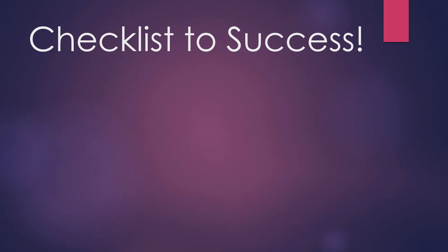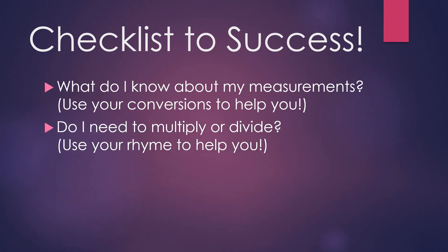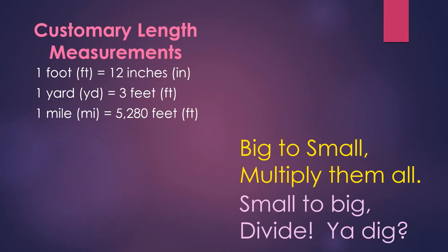When doing your conversions today, use this checklist for success. Step one: ask what do I know about my measurements — this is where your conversion chart helps. Step two: ask do I need to multiply or divide — use the rhyme, big to small multiply them all, small to big divide you dig. Step three: solve and check your work. Converting in the customary length system just takes a little thought. Think about your two units and whether you're going big to small or small to big, and you will find success. Take your time and check your work every time. Good luck!